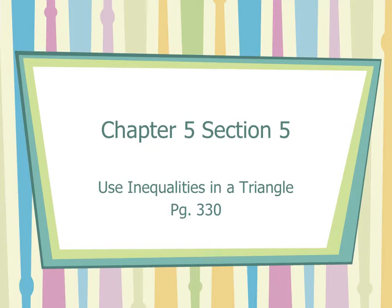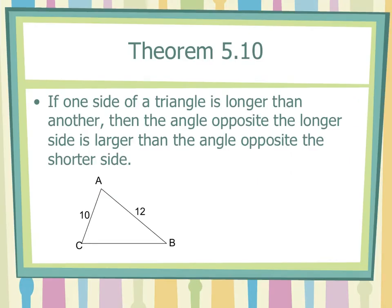Section 5-5 is called using inequalities in a triangle. We're going to learn some stuff about inside a triangle. The special names and points of concurrency are gone. Theorem 5-10 says: if one side of a triangle is longer than another, then the angle opposite the longer side is larger than the angle opposite the shorter side. This is where common sense helps — if you take two points and spread them further apart, the bigger the angle that makes those points. So if this side is 10 and this side is 12, the angle that makes 12 is going to be bigger than the angle that makes 10.